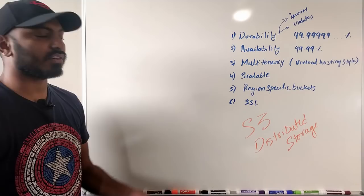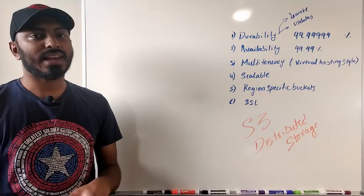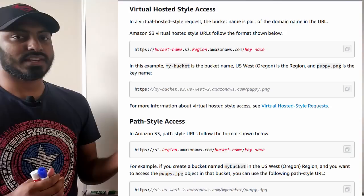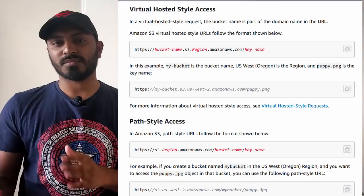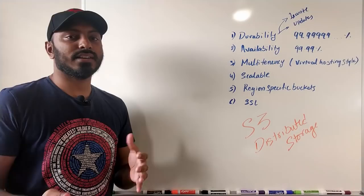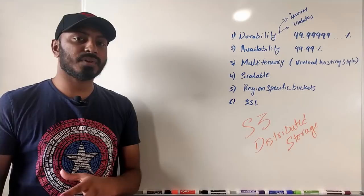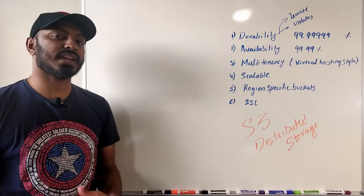We also want to support virtual hosting style access. For example, you can access your bucket on S3 using bucket.s3.aws.com, or you can access it as s3.aws.com/your-bucket-name/path-to-files. We have to provide that feature as well. The system should also be scalable — the customer shouldn't worry about scaling; the system should automatically scale so customers can keep uploading as many files as they want.